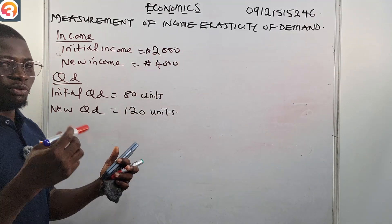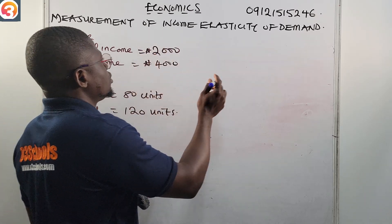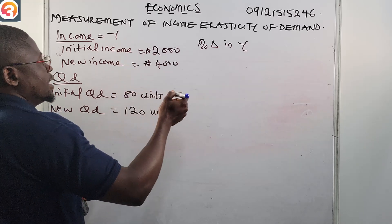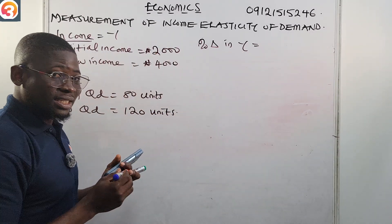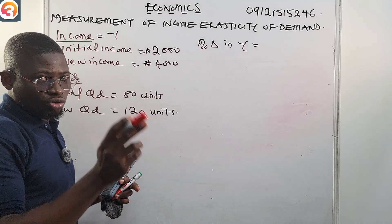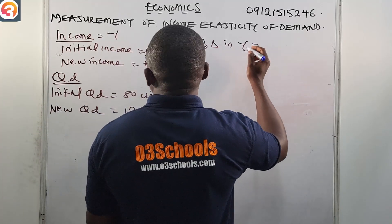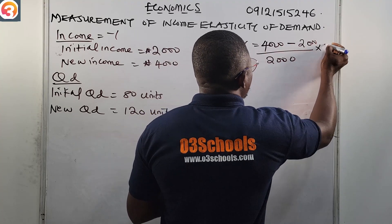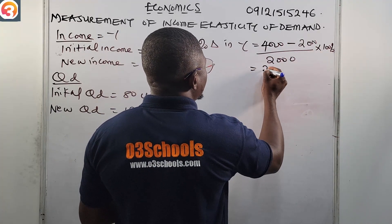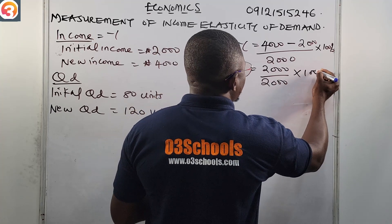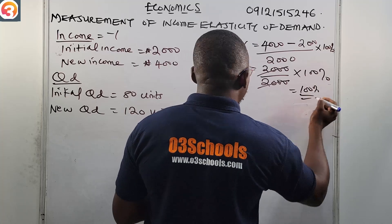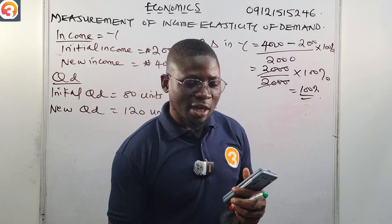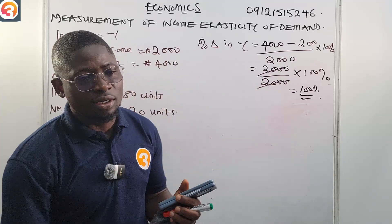This is very easy. We find the percentage change in income, then the percentage change in quantity demanded, divide them, and we are done. Percentage change in Y equals new minus initial over initial, times 100 percent. So: 4,000 minus 2,000 over 2,000, times 100 percent. That gives 2,000 over 2,000 times 100 percent, which equals 100 percent. The consumer's income increased by 100 percent.